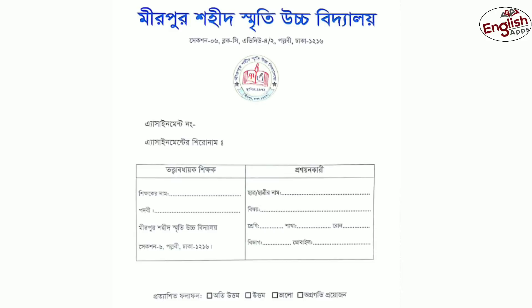If you do this assignment, you will write Assignment 3. You will write the same name as a number. Then you will write information as well. You will write information 7.